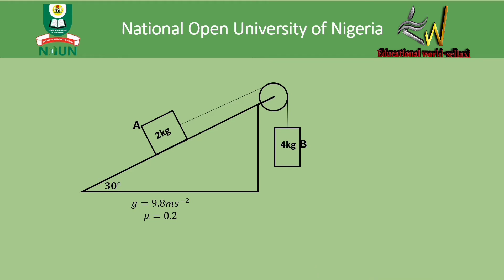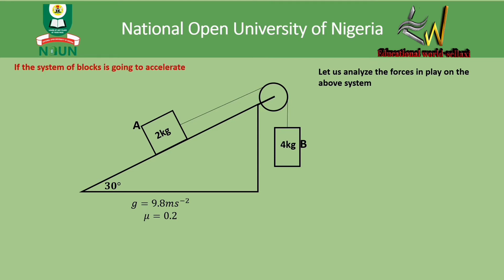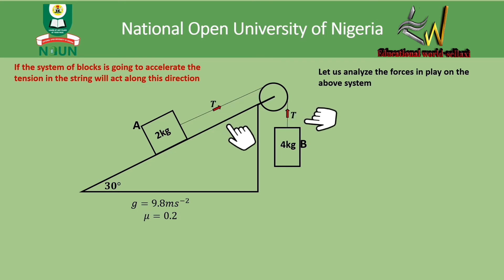To tackle this problem, we first have to analyze the forces in play on the system. It is important to notice that if the system of blocks is going to accelerate, the tension in the string will act along this direction as shown in the diagram. For block A — the 2 kg block — the tension is pulling the block up the incline.